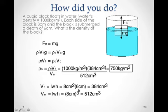So that gave us the 384 centimeters cubed, and then divided by the overall volume of the cube. And so when we do that, we get 750 kilograms per meters cubed.